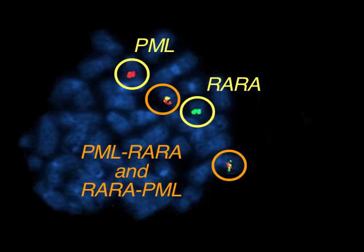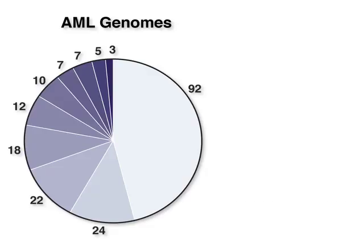Cytogenetic analysis is used to classify a patient's risk profile in order to design a treatment plan, but many patients have normal karyotypes indicating an intermediate risk of relapse. Since the outcomes of these patients are highly variable, a more precise method for determining risk is needed. To address this problem, investigators with the Cancer Genome Atlas Research Network are evaluating AML genomes.